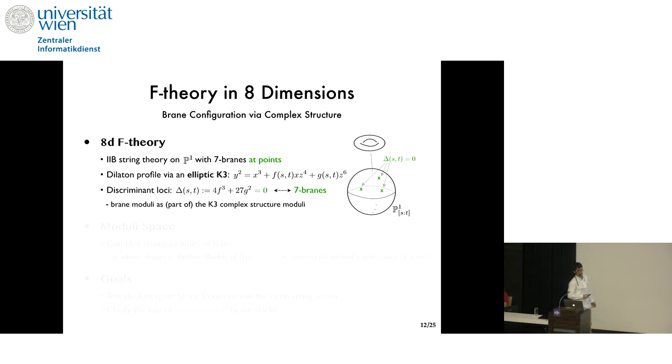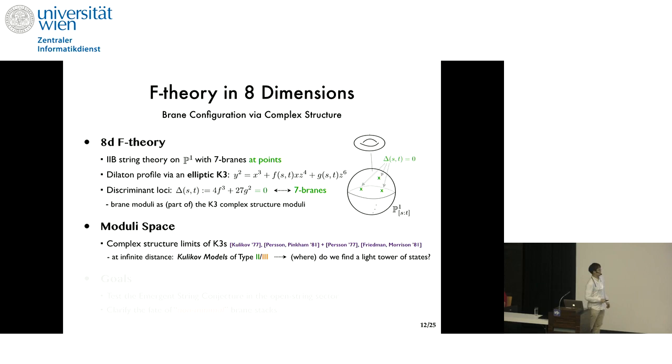So brane moduli are naturally part of the K3 complex structure. And mathematically, the complex structure limits of K3s have been established under the name of Kulikov models of type 1, 2, and 3. Of these three types, it is known that the types 2 and 3 lie at infinite distance, and I'll describe them later. And here, the physics question we'd like to pose is where do we find the light tower states if we compactify F-theory on such Kulikov models? So one of the goals we have is to test emergent string conjecture now in the open string sector, but there is also another, a priori independent goal, which is to clarify the fate of the so-called non-minimal brane stacks.